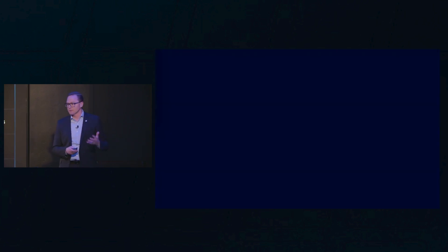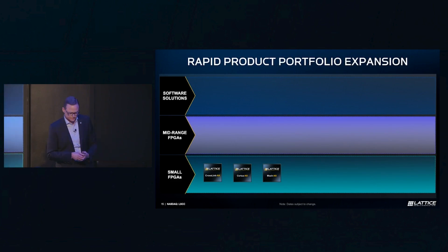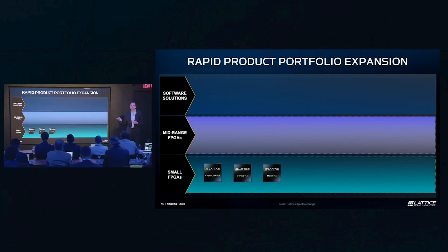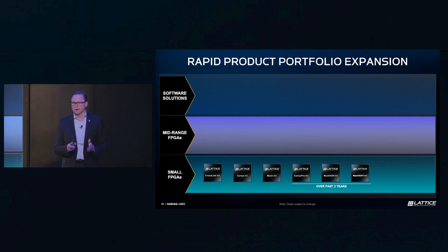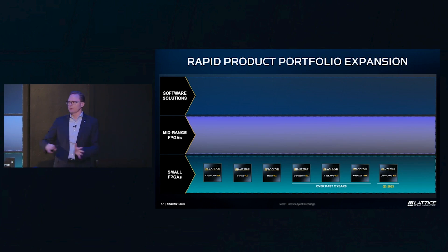We're positioned in the right end markets — large, growing addressable markets. And if you asked what we're most excited about, it would be the portfolio expansion we're going through right now — a really rapid build-out. Starting with small FPGAs, we've doubled the size of the Nexus portfolio over the past couple of years. We're very pleased to announce today, for the first time, that we'll be bringing out our seventh product based on the Nexus platform — our seventh device family in Q3 of this year. We absolutely have a full roadmap of innovative products for small FPGAs, and we are not going to let our foot off the gas there.